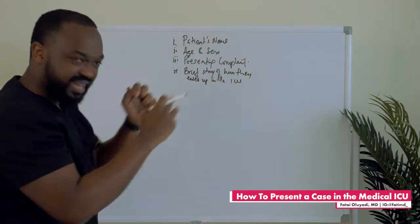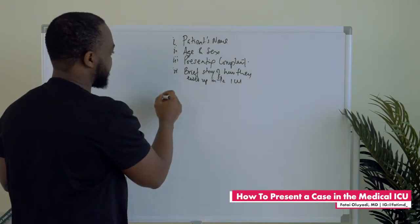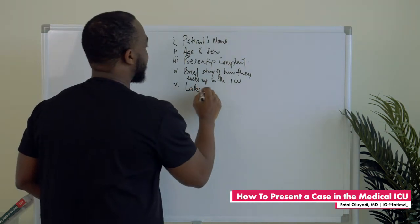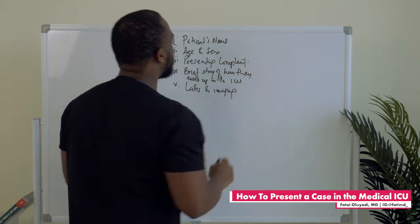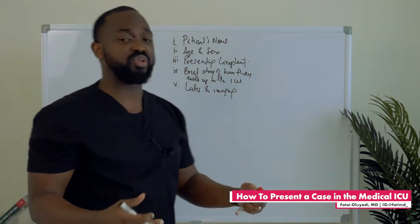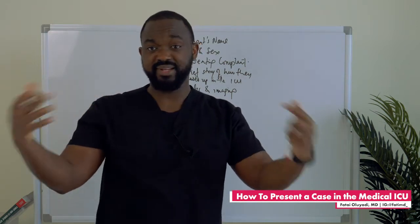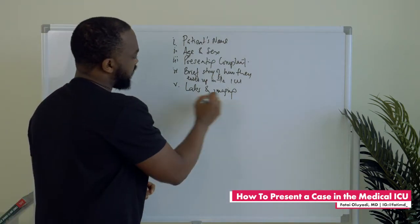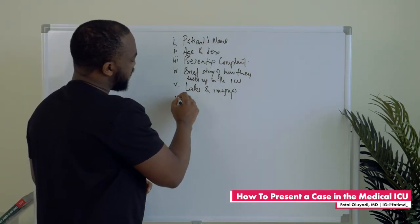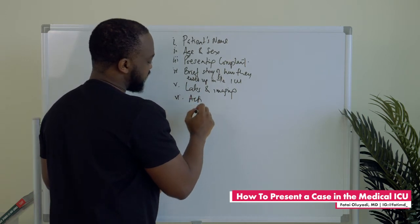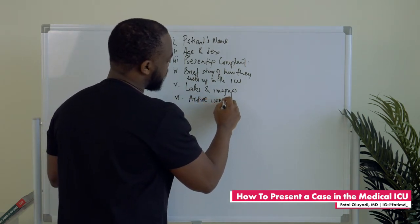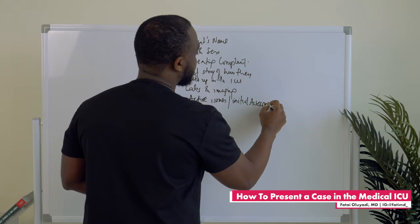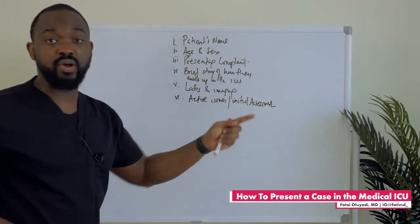Just to kind of make things make sense. After that we'll talk about what investigations have been done so far — here we mention labs and imaging. We're assuming this is a presentation you're giving for the first time, that the attending is finding out about this patient for the first time, so you want to include as many things as possible so they get the big picture. Then you talk about the active things you're doing.